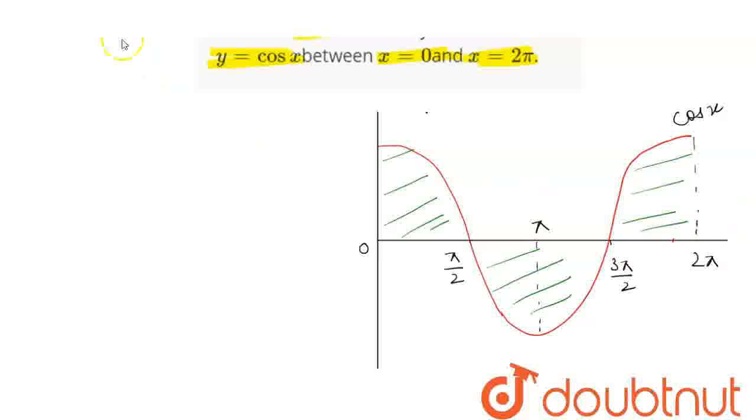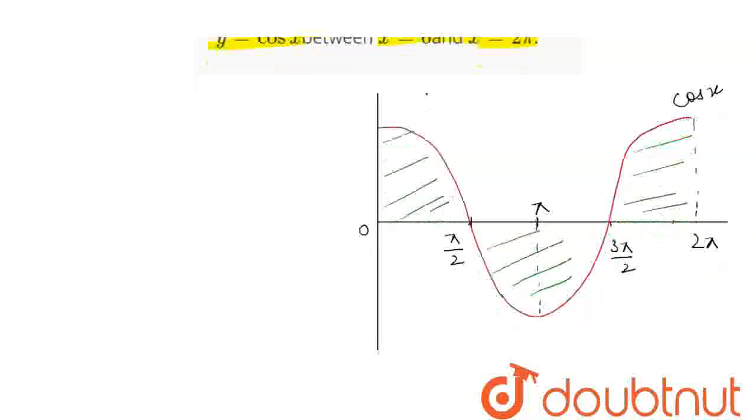We know that cos is a periodic function. So, the area from here to here will be equal to that from π by 2 to π and it will be equal to from π to 3π by 2 and also it will be equal to 3π by 2 to 2π.